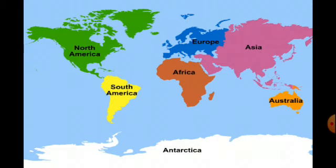Our earth is divided into seven continents: North America which is in green colour, South America which is in yellow colour, Europe in blue colour, Africa in red colour, Asia in big colour, Australia in orange colour, and Antarctica in white colour. So our earth is divided into seven continents.